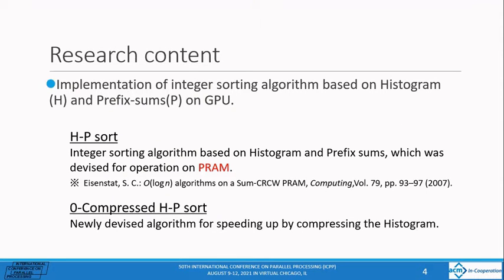In my research, I implemented integer sorting algorithms based on histogram and prefix sums on the GPU. First, an integer sorting algorithm based on histogram and prefix sums, which was designed to work on prelims. This HP-sort is the actual implementation of this algorithm on the GPU. We then devised a new zero-compressed HP-sort, which is an improvement on HP-sort. This algorithm is faster by compressing the histogram. We also experimented to see if speeding up was achieved by comparing the computational times between digit-sort and cub-sort.